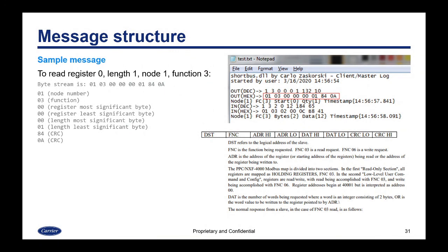Here is a sample message structure. If you wanted to read register 0 for a length of 1 from node 1 using Function 3, you would create a byte stream as such. Normally this will be abstracted by your software or PLC — you just specify which register to read, how many registers, the node address, and the function code, and the byte stream is created for you. The stream starts with a node number, includes the function, has two bytes for the starting register, two bytes for the length, and then creates a CRC to error-check the message on the other end.